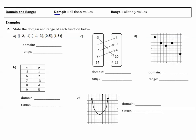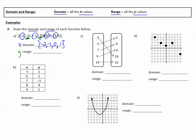Domain and range: domain is all the x values; range is all the y values. Number two: state the domain and range of each function below. In example A, I'm looking for the domain, so I'm looking for all of the x values and writing them in a set. The range is the y values. I list them from least to greatest, starting with negative 3, then negative 1, and because I have 5 twice, I only write it once — I'm looking for distinct values.